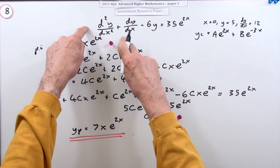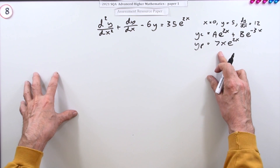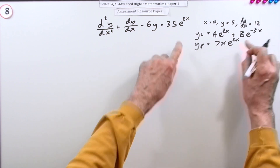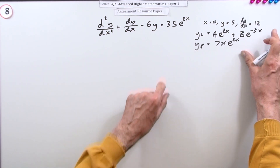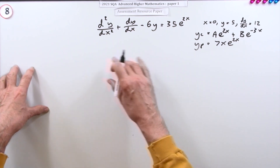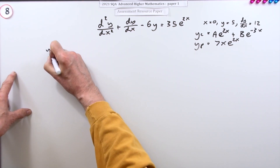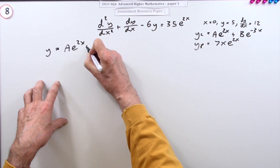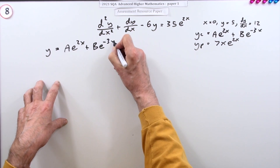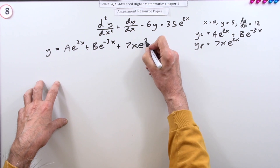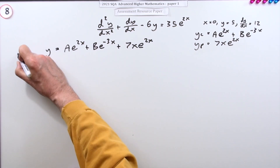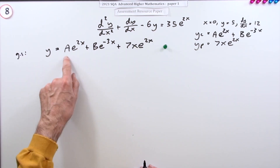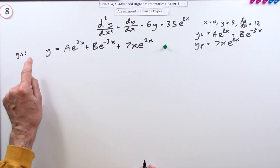The complementary function gives zero and the particular integral gives 35e^(2x), so their sum solves the full equation. The general solution is therefore y = Ae^(2x) + Be^(−3x) + 7xe^(2x). Stating the general solution earns a mark, but we still need to find A and B using the initial conditions.